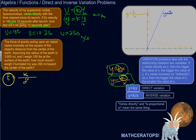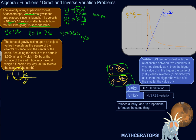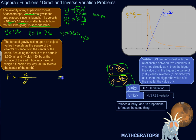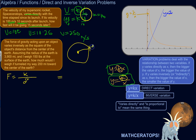Weight is just a measure of the force of gravity acting on an object near the surface of a planet. So the weight of an object varies inversely as the square of the distance from the center of the earth. Assuming the radius of the earth is 3,900 miles — the distance from the center to the surface — and I weigh 150 pounds at the surface, that's the force of gravity on me.